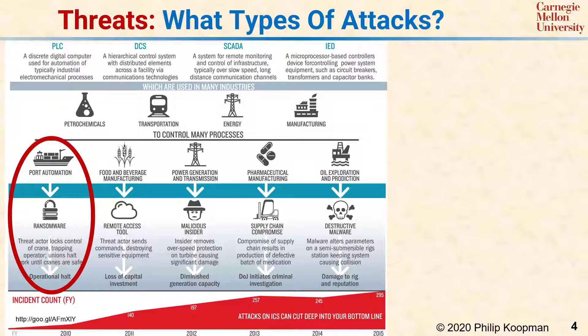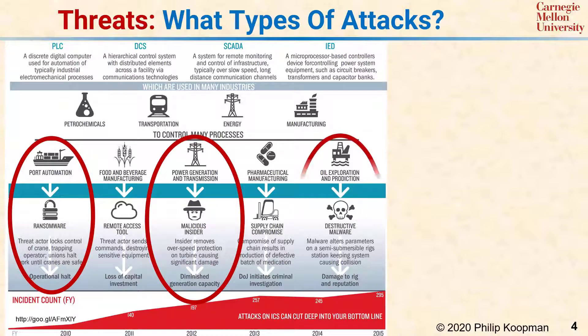Another example is a malicious insider who modifies operational software in a power generation and transmission facility to cause equipment damage. The last example is an oil exploration rig, where the rig has been infected by malware that alters its control parameters, causing damage to the rig. Again, these are just examples, and the potential for different variations and combinations of attacks is almost limitless and applies to most embedded systems.